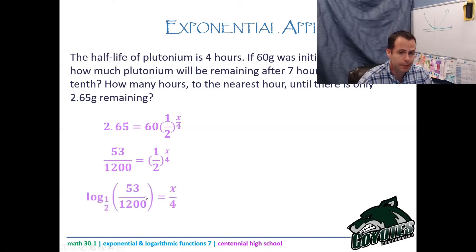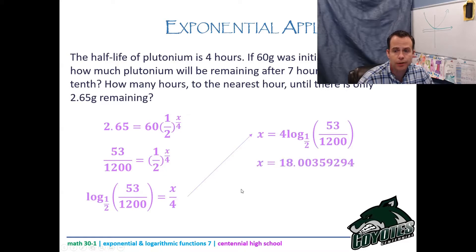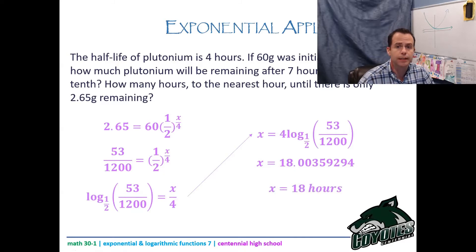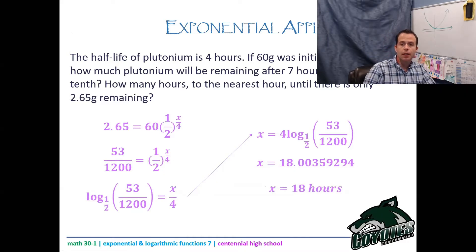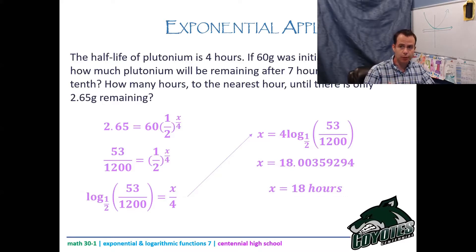Multiply both sides by 4 to isolate t. The result is 18.00359, so to the nearest hour that's 18 hours. On a multiple choice test you could also graph y1 and y2 and look for the x-value of the intersection instead of doing the algebra.